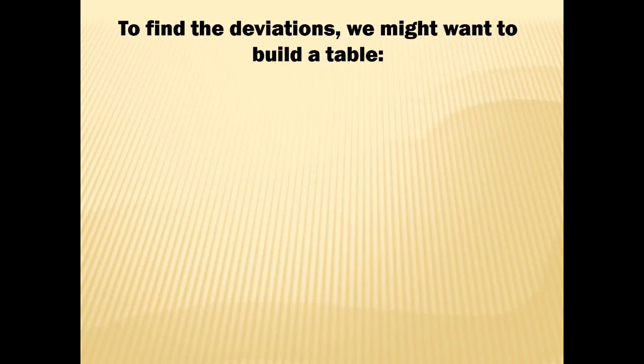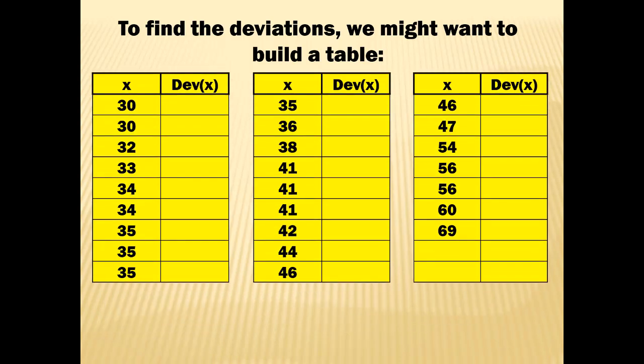To find the deviations, it's helpful to build a table to keep track of each data value and its deviation. I've listed all 25 data values and left a blank column for the deviations. To find each deviation, we take the data value and subtract the mean — in this problem, we'll be subtracting 42.